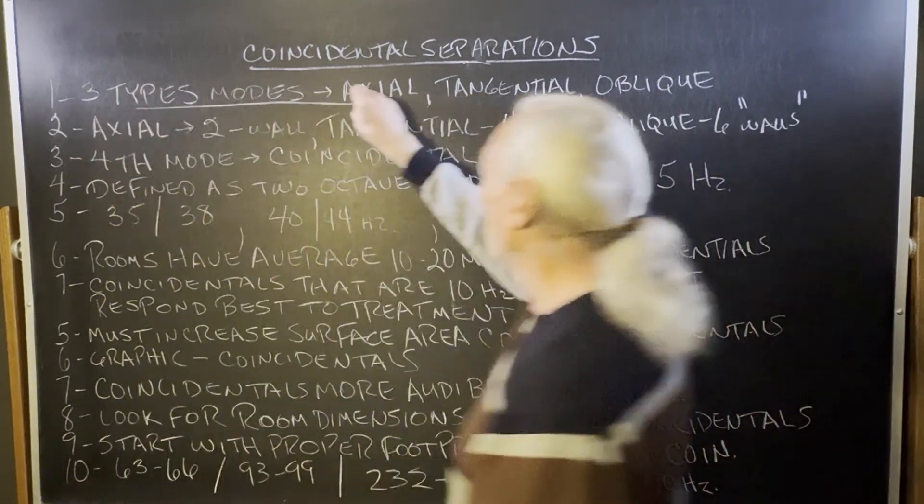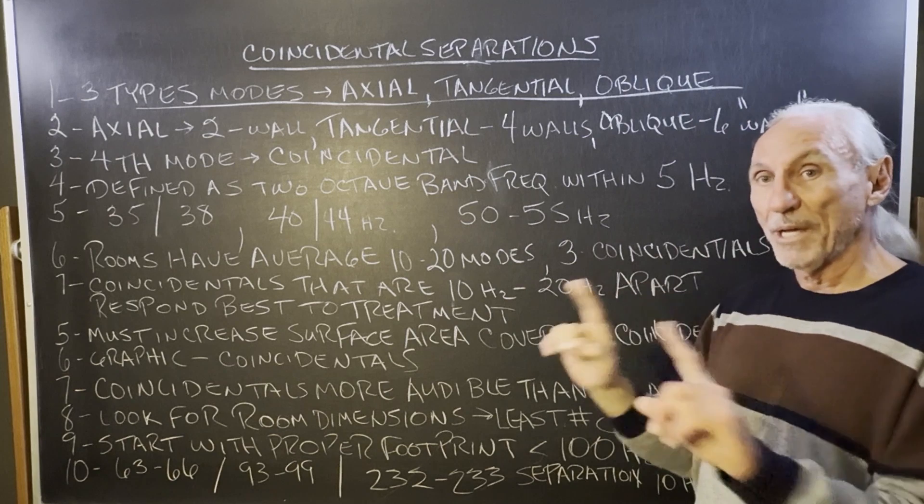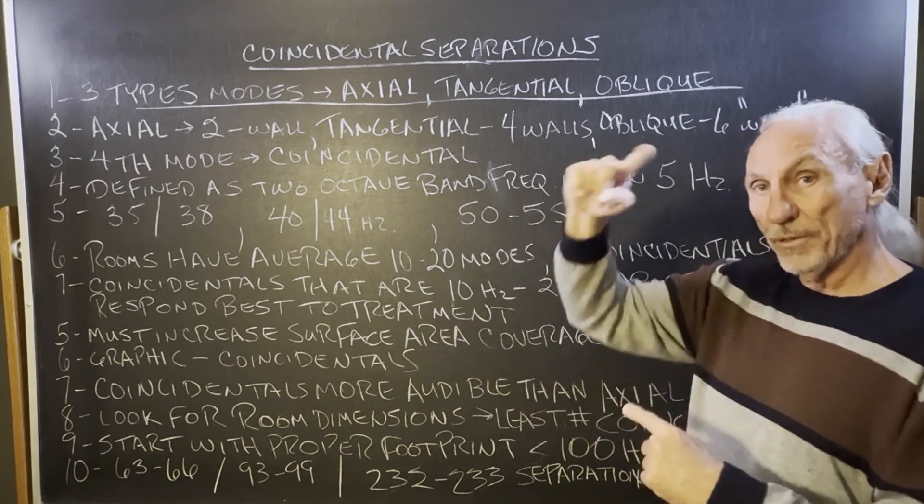So we know we have three types of modes: axial, tangential, and oblique. Axial between two walls can be sidewall to sidewall, front to rear, floor to ceiling.